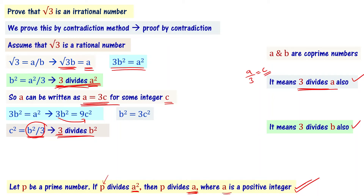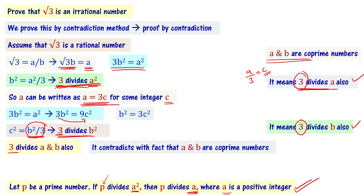So 3 divides a and 3 divides b, meaning a and b have a common factor other than number 1 — that common factor is number 3. But we initially assumed that a and b are co-prime numbers, meaning they have only 1 as the common factor. Now 3 is also a common factor, which contradicts the fact that a and b are co-prime numbers.